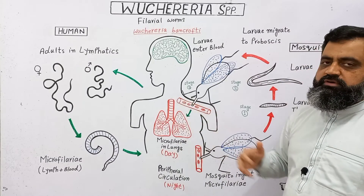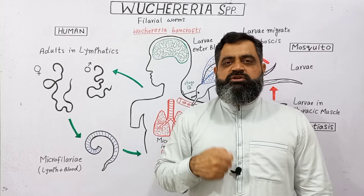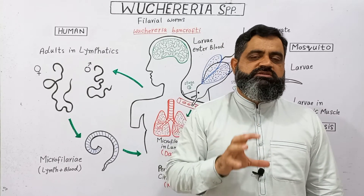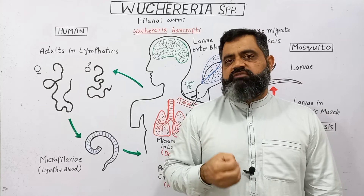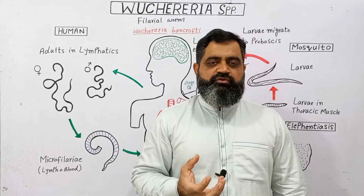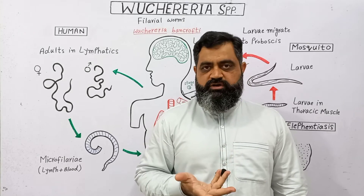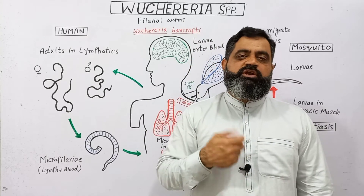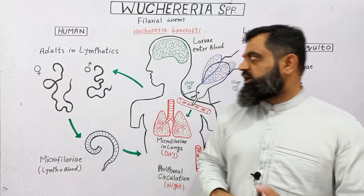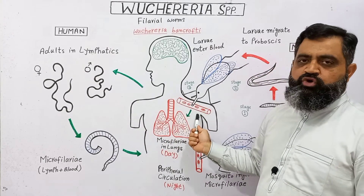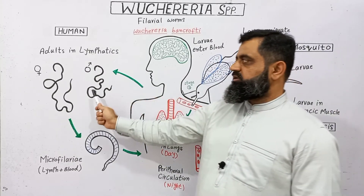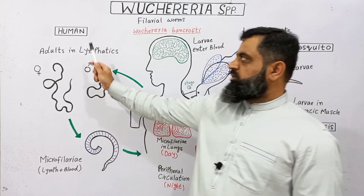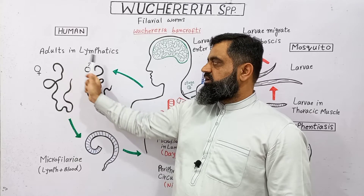The filarial worm, when it entered the blood capillaries of this person, reached the circulatory system and then the lymphatic system. As we know, the lymphatic system comprises lymphatic vessels, lymphatic ducts, and lymphatic capillaries, which collect interstitial fluid from all over the body and return it back to the heart. The larva grew and developed into an adult in the lymphatic system — adult male and adult female. Their shape is just like a thread, which is why these are known as thread worms. In humans, these worms are present in their lymphatic ducts.